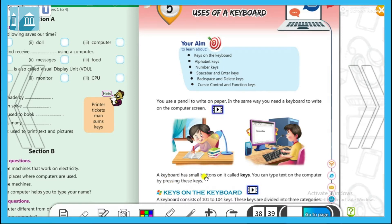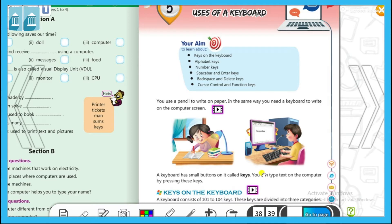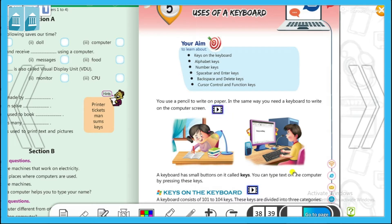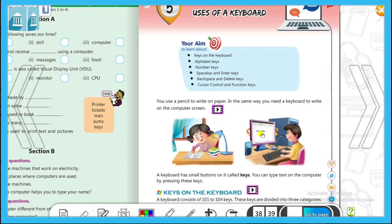A keyboard has small buttons on it called keys. ये छोटे-छोटे buttons होते हैं, उसे हम कहते हैं keys. You can type text on the computer by pressing these keys. आपको जो text type करना है, तो आप keyboard में वो press करोगे और वो type हो जाएगा। For example, alphabet keys से K, I, O कुछ भी type करोगे तो वो screen पर आ जाएगा।